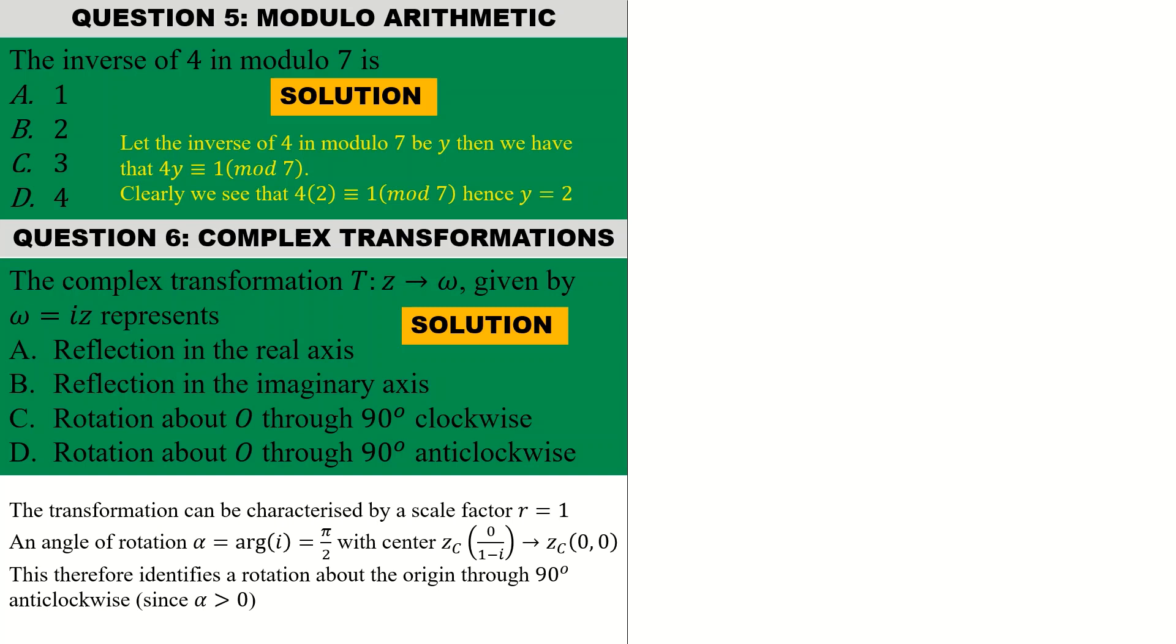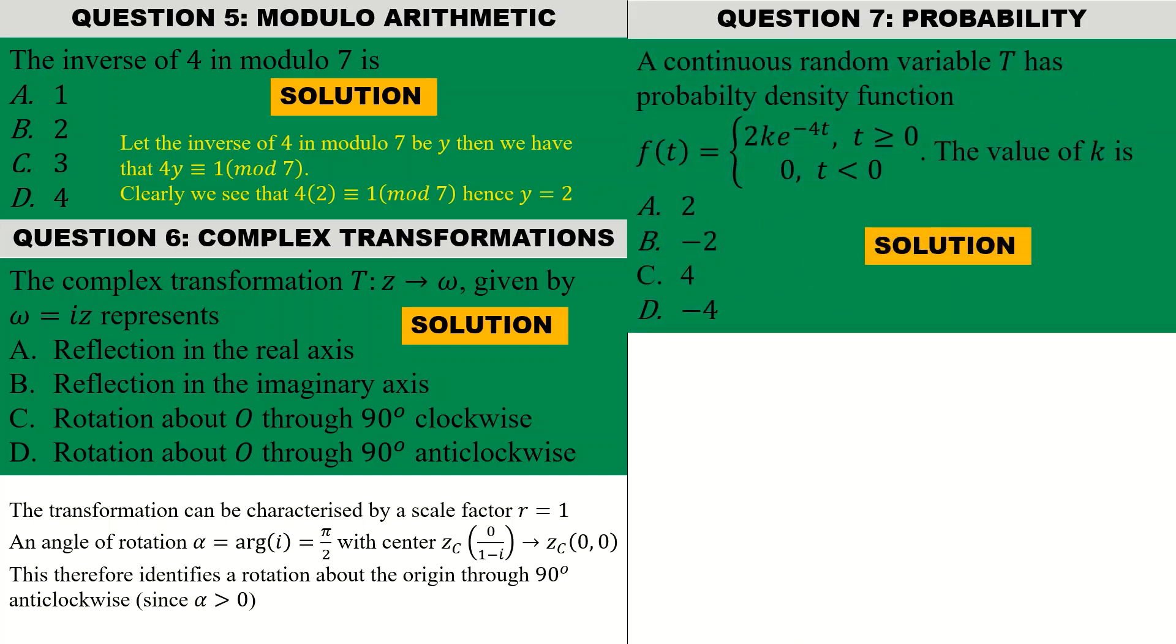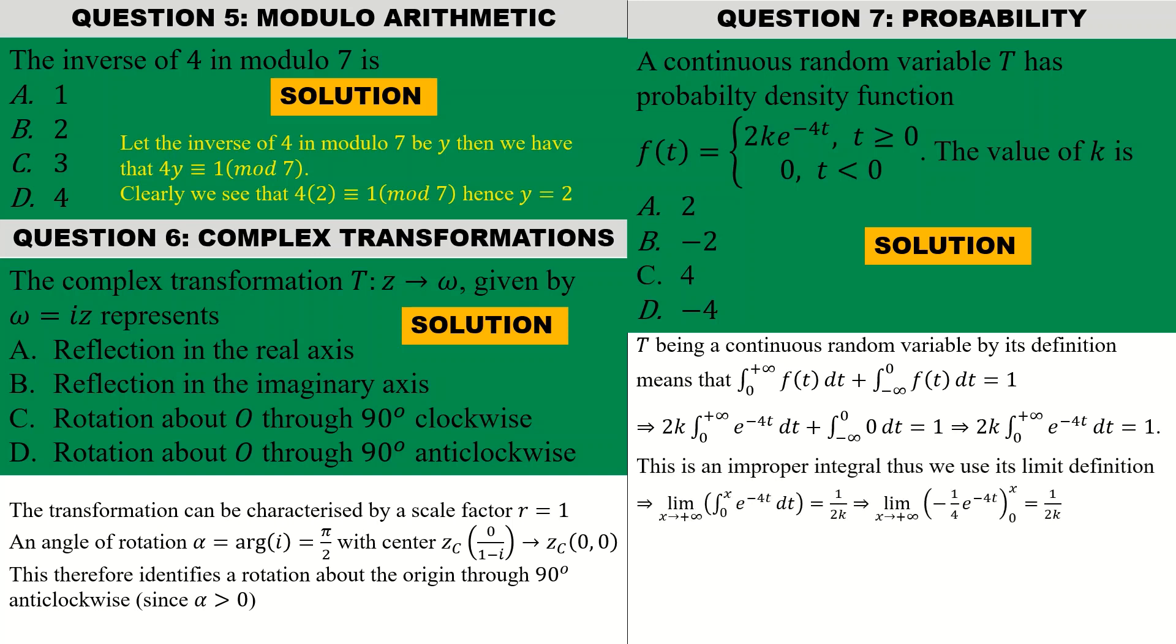Question seven was on probability. For the solution, we have been told that C is a continuous random variable. By the definition, we have the integral from 0 to infinity of my function plus the integral from negative infinity to 0 of my function to be equal to 1, according to the piecewise function that has been defined. From there we simply integrate the functions in the various intervals, and since it is an improper integral we use its limit definition. From there we can get the value of k by taking the limit, and we get the value of k to be equal to 2, hence option A is correct.